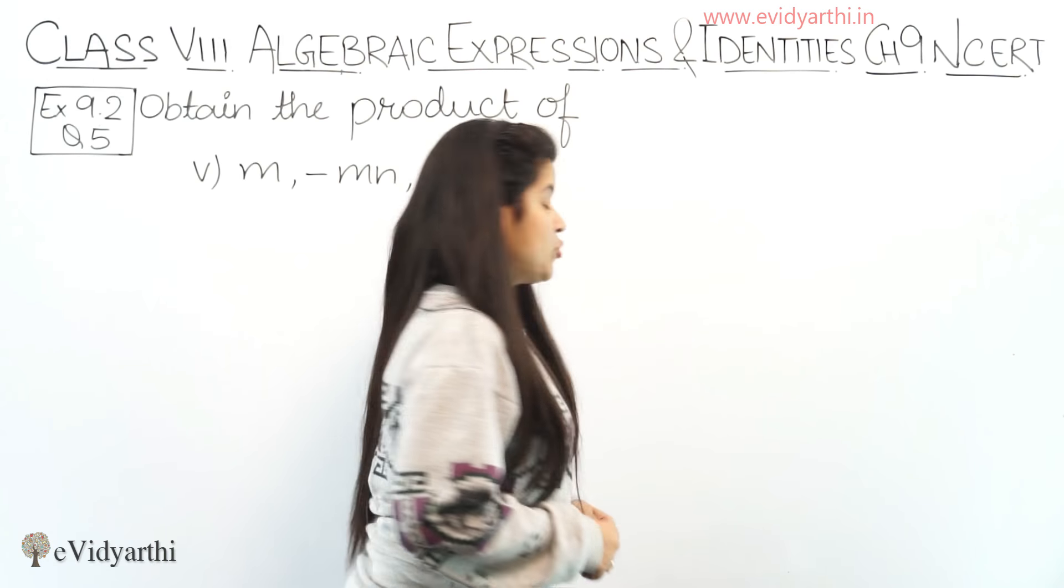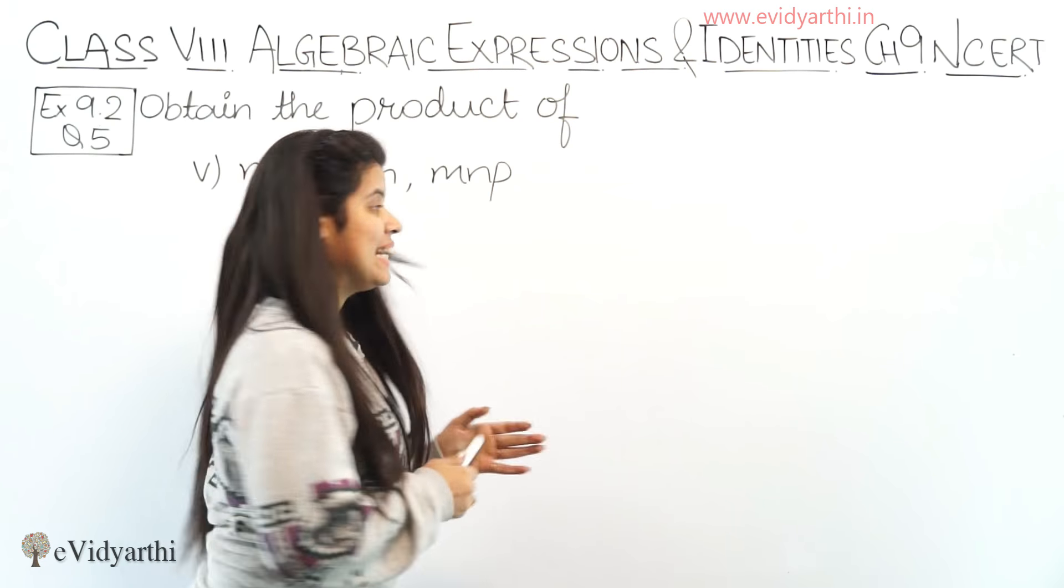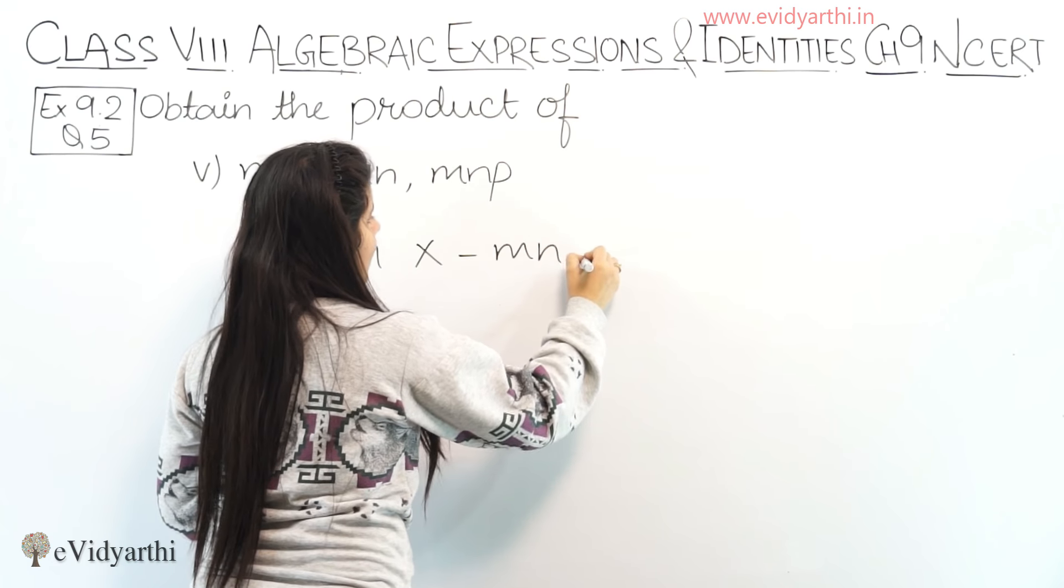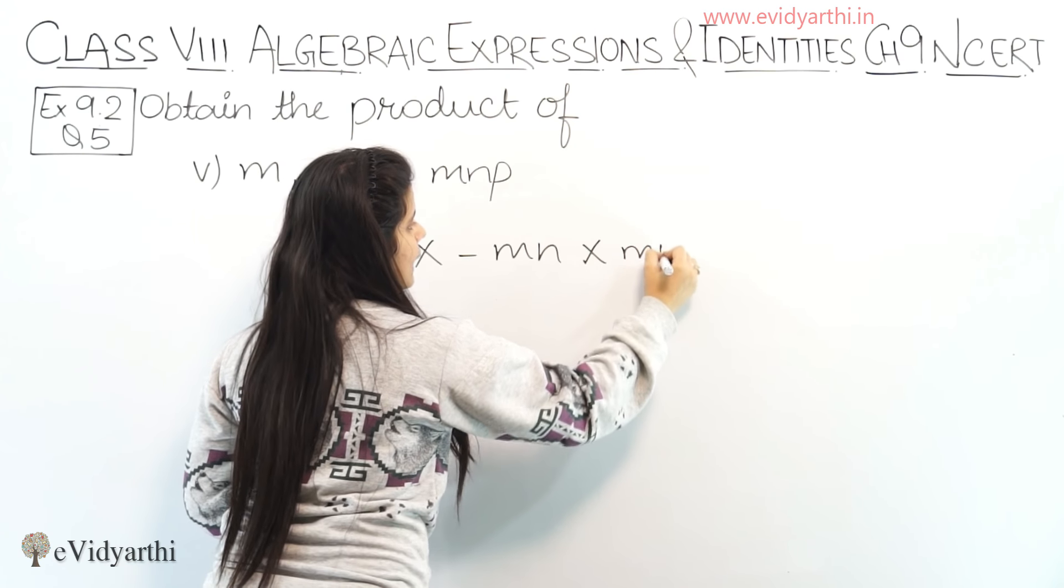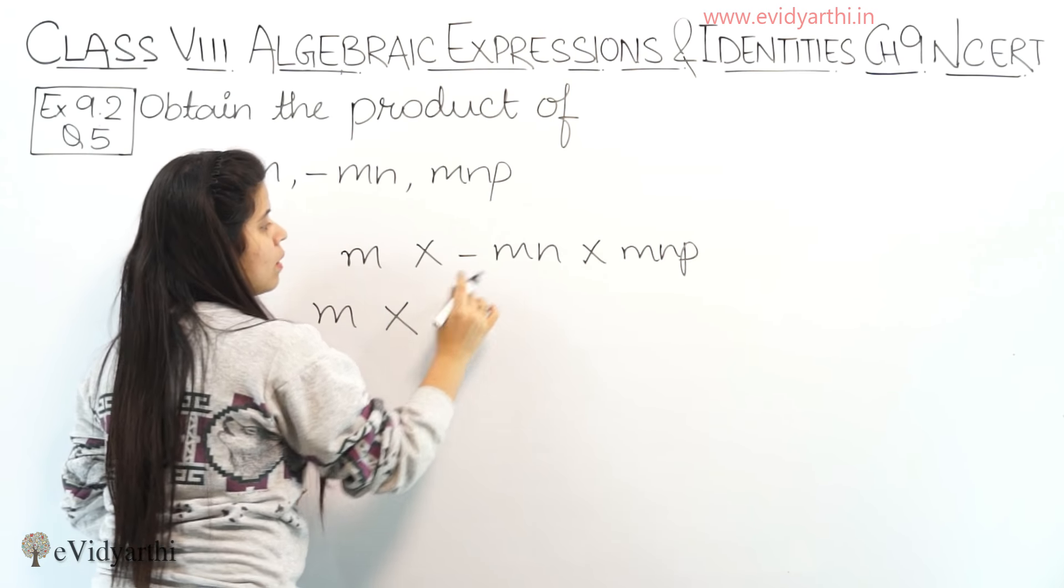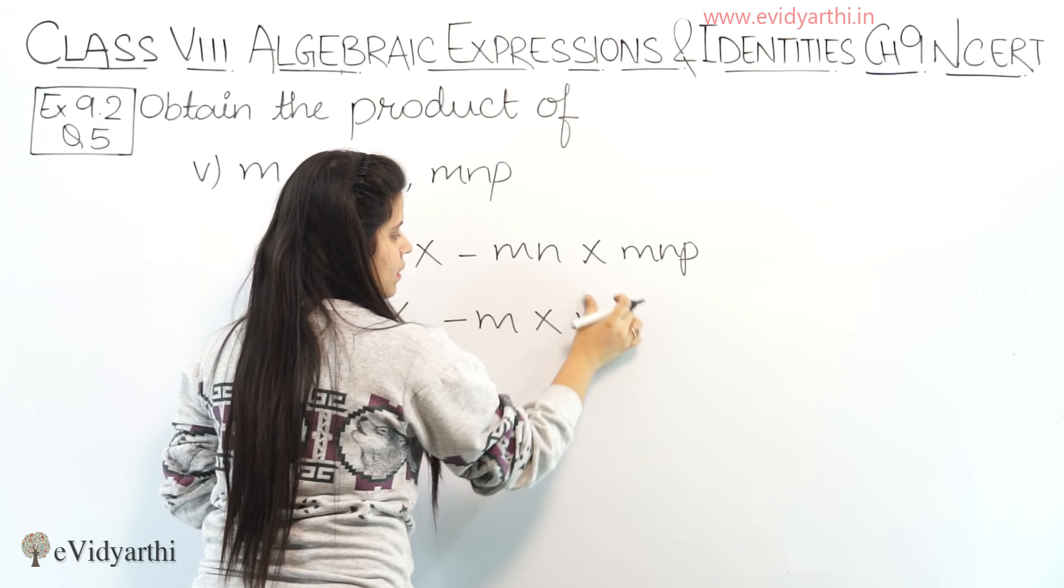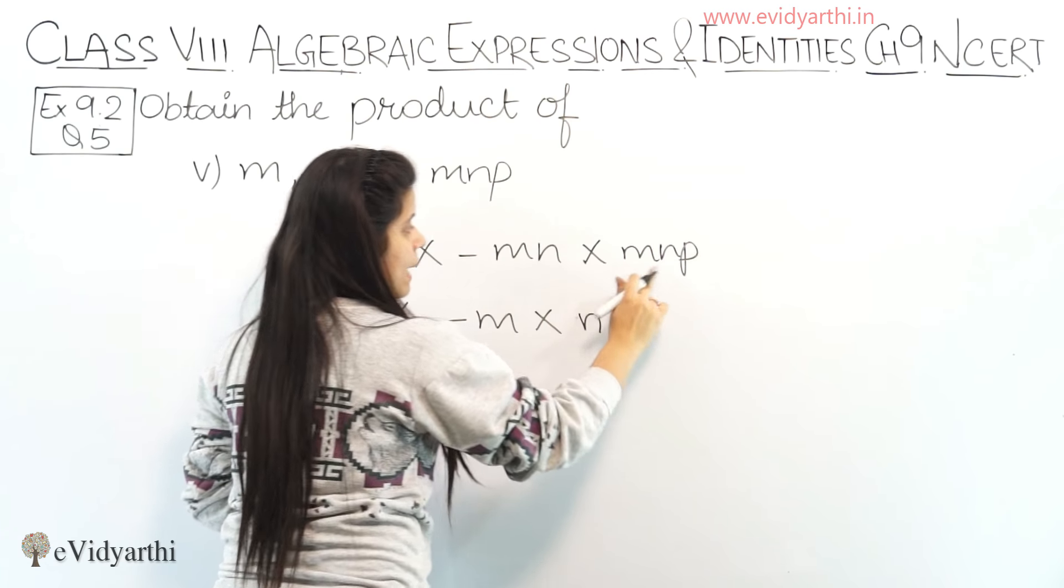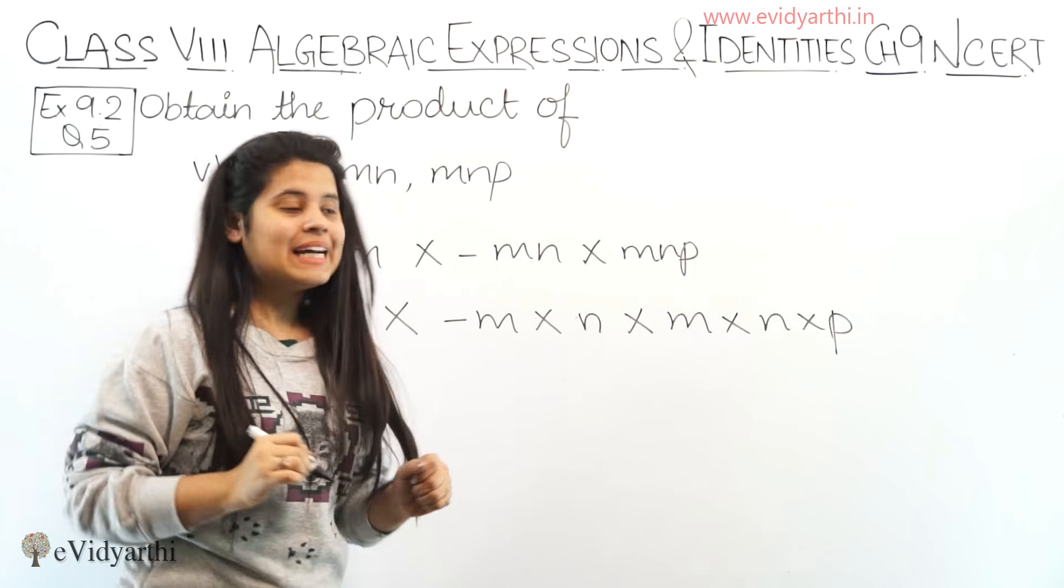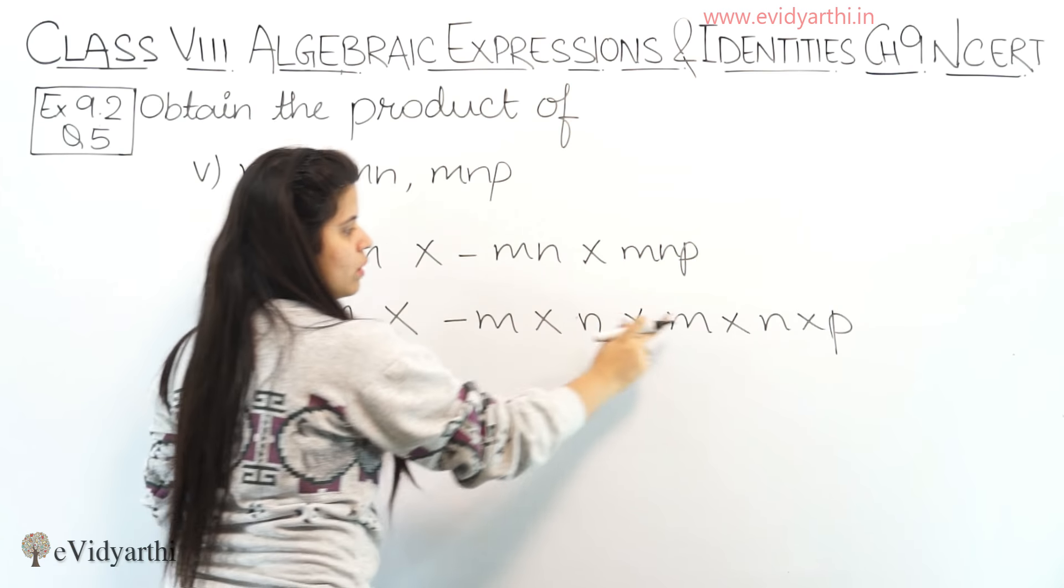Coming to the 5th part. We have m, minus mn and mnp. So let's find the product: m into minus mn into mnp. Let's expand: m as it is, into minus mn means minus m into n, into mnp means m into n into p. So first we have m: 1, 2, 3. Three times m, so this will be m cube.